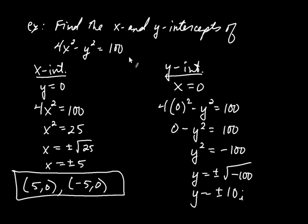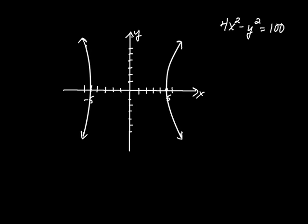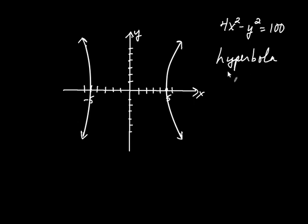If you graph this curve, the equation 4x squared minus y squared equals 100 has x-intercepts at (5, 0) and (-5, 0) but the curve never crosses the y-axis. This curve — these two branches — is called a hyperbola. We'll talk more about hyperbolas later in the course. Generally, to find x- and y-intercepts, you set the other variable equal to zero and solve the resulting equation.